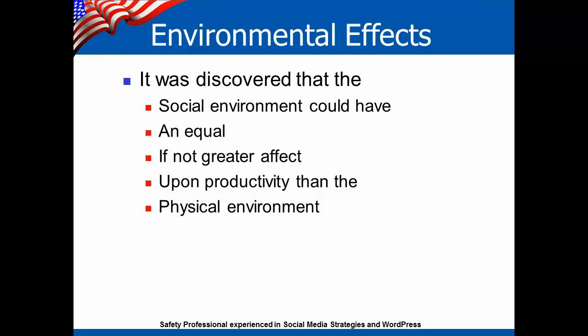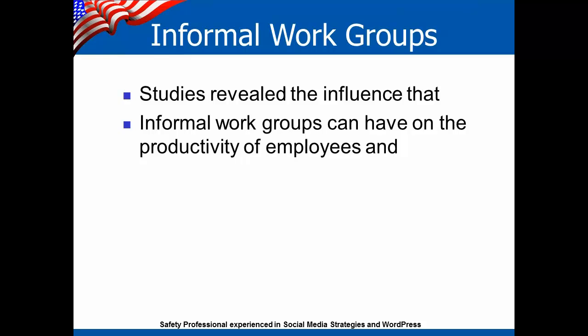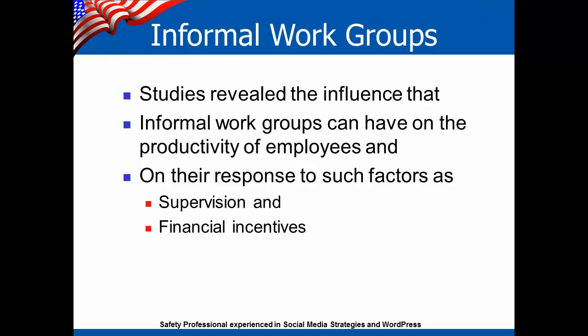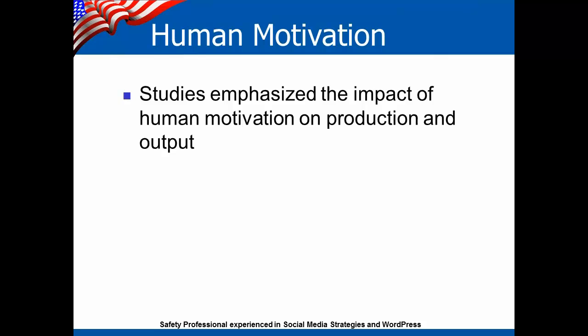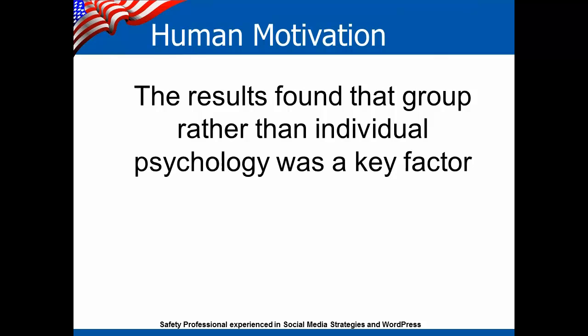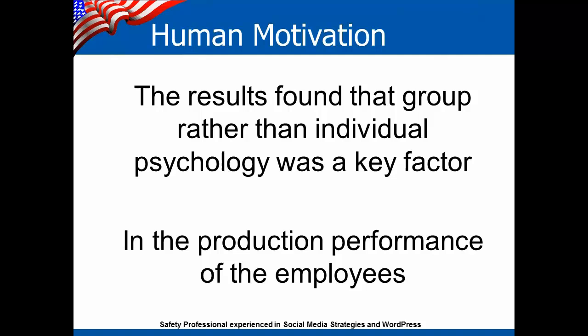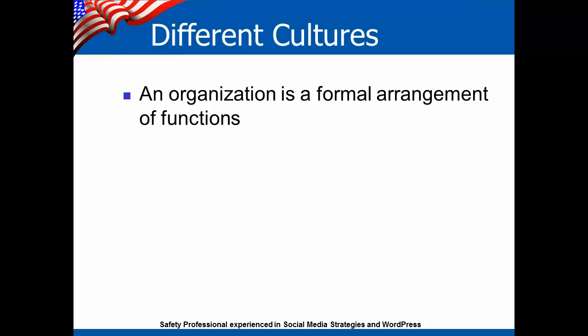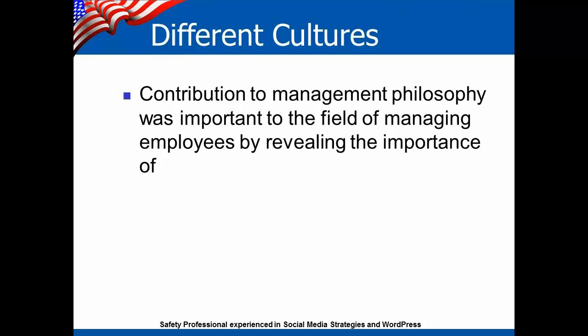The studies revealed the influence that informal work groups can have on the productivity of employees and on their response to such factors as supervision and financial incentives. These studies emphasized the impact of human motivation on production and output. When the first phase of experiments began, it was believed that every social problem was ultimately individual. The results found that group rather than individual psychology was a key factor in the production performance of the employees. An organization is a formal arrangement of functions, as well as a social system with different cultures. Therefore, a contribution to management philosophy was important to the field of managing employees by revealing the importance of human emotions, reactions, and response to managing others.